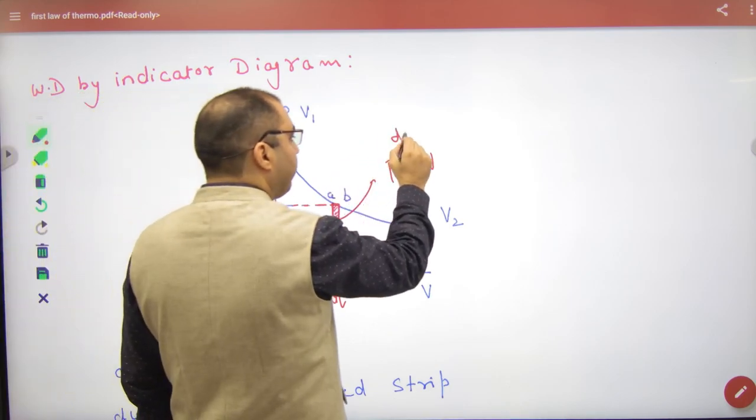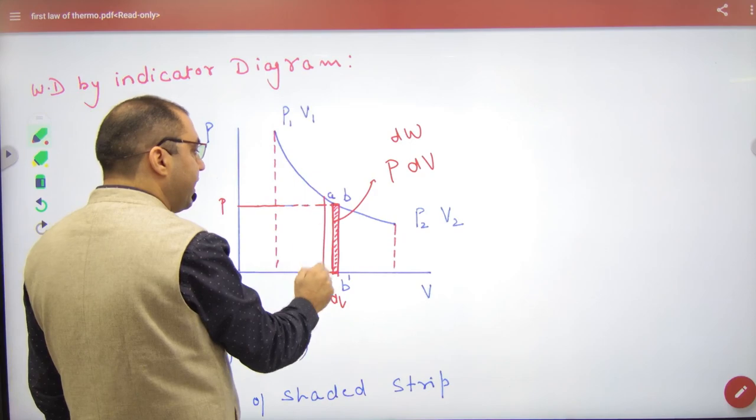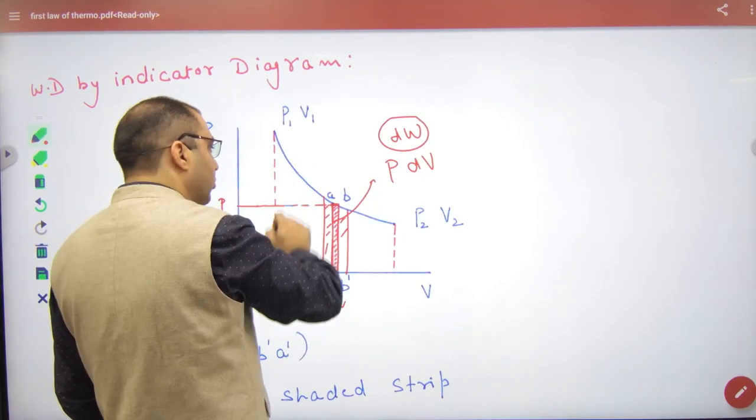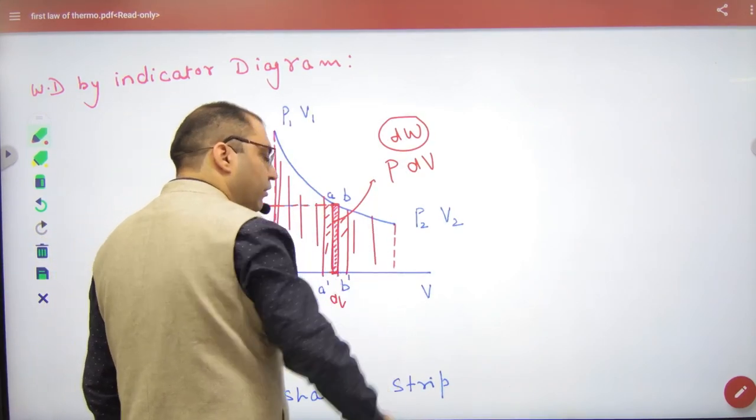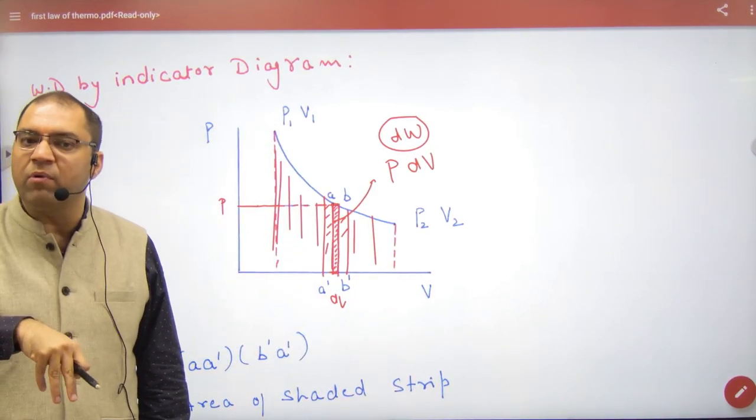Pdv small amount of work done, and if you have total work done then how many rectangles you have to take work done. And you have to get work done, so what is total amount of work done? Proof that area under pv diagram total amount of work done.